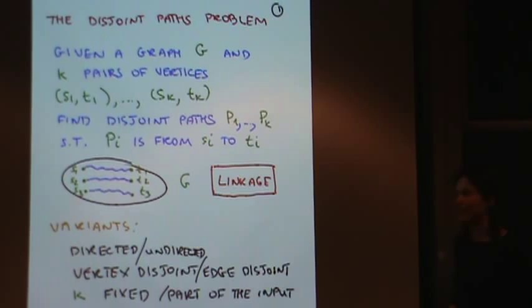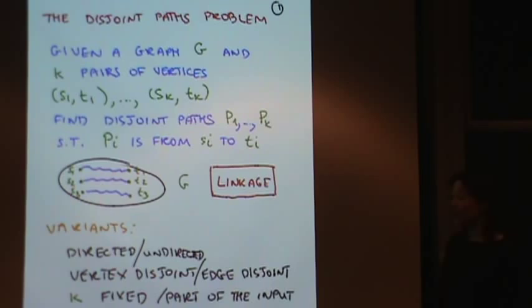The way I told you the problem so far, it's not sufficiently well defined. Why? Because of all these things. First, what's a graph? Is it a directed graph or an undirected graph? Both make sense. The second, more delicate question is what does it mean disjoint? What does it mean that I don't want the paths to interfere? I may require vertex disjoint or edge disjoint. Again, both make sense.